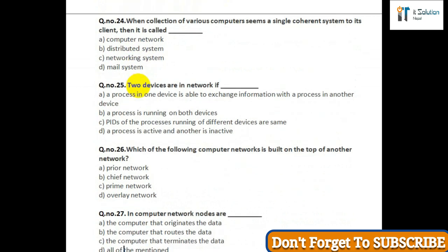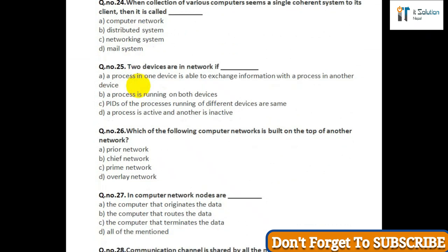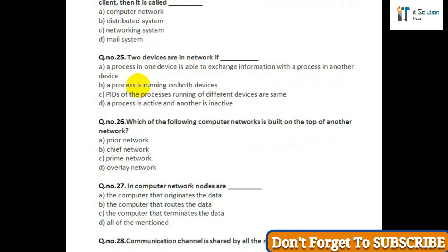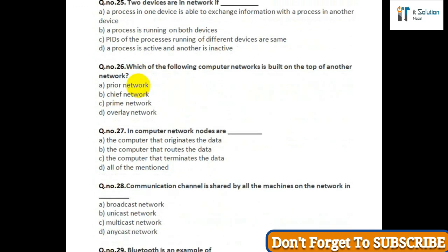Question number twenty-seven: In a computer network, nodes are — option A: the computers that originate the data; option B: the computers that route the data; option C: the computers that terminate the data; option D: all of the mentioned. Question number twenty-eight: Communication channel is shared by all machines on the network in — option A: broadcast network; option B: unicast network; option C: multicast network; option D: anycast network.